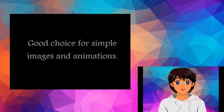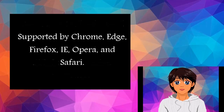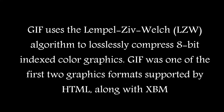Third, Graphics Interchange Format (GIF) — a good choice for simple images and animations. Prefer PNG for lossless and indexed still images, and consider WebP, AVIF, or APNG for animation sequences. Supported by Chrome, Edge, Firefox, IE, Opera, and Safari. GIF uses the Lempel–Ziv–Welch algorithm to losslessly compress 8-bit indexed color graphics. GIF was one of the first two graphics formats supported by HTML, along with XBM.